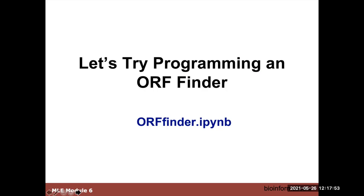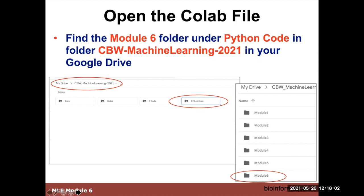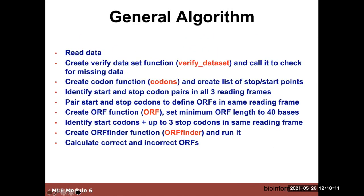We're going to use Python to program an ORF finder — this is not machine learning, just Python. The general algorithm reads the data, verifies it for missing values, creates a codon function that identifies start and stop codons, then looks at all start and stop codon lists in three different reading frames. We identify start-stop codon pairs that are in the same reading frame, then create an ORF function that analyzes those lists looking for a separation — in this case ORFs must be at least 40 bases, which is quite short.